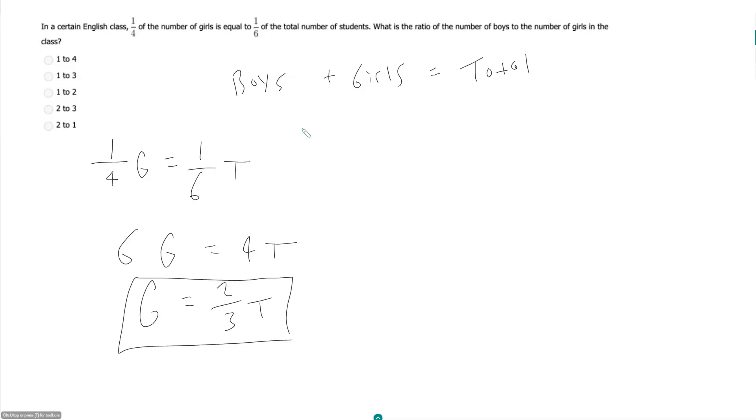So based on this, I get my boys, which we haven't even talked about yet, plus my two-thirds T, which is equal to T, meaning my boys now must be equal to one-third T.